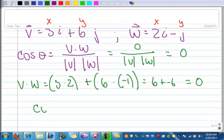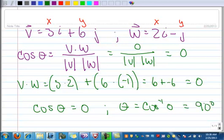So the cosine of theta is 0, which means theta is the inverse cosine of 0. Where is the cosine 0? The cosine is 0 at 90 degrees, or pi over 2.